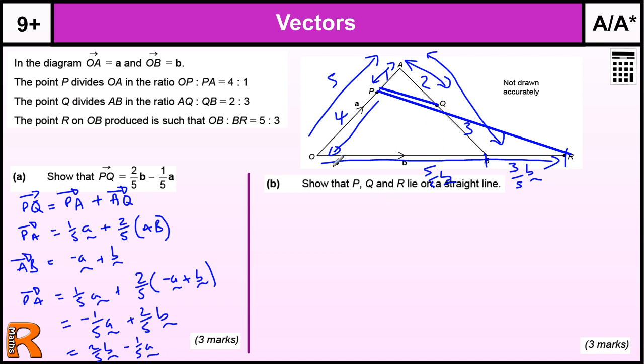So, from P to O, we want PR is going to be P to O plus O to R. And P to O is 4 out of 5, 4 fifths A. But it's negative, so it's minus 4 fifths A. And then we're going to add on B plus this 3 fifths B. So that gives us, and we tend to put the positive stuff at the front. So we've got 8 fifths B minus 4 fifths A. That's fairly straightforward.